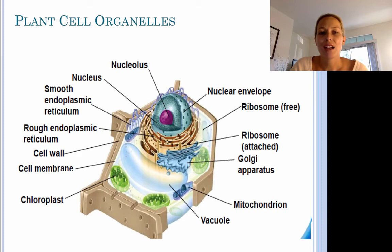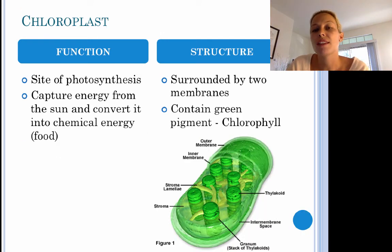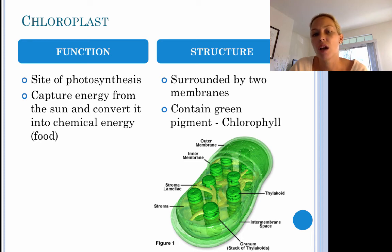Plant cells contain all of the organelles just discussed, in addition to three others. Plant cells have a large central vacuole whose primary role is storage; it can also support the cell — useful for big tall trees or plants. Plant cells also have chloroplasts, one of the main differences between plant and animal cells. Chloroplasts are the site of photosynthesis, responsible for capturing energy from the sun and converting it into chemical energy or food. They contain the green pigment chlorophyll, which gives plants their greenish color.